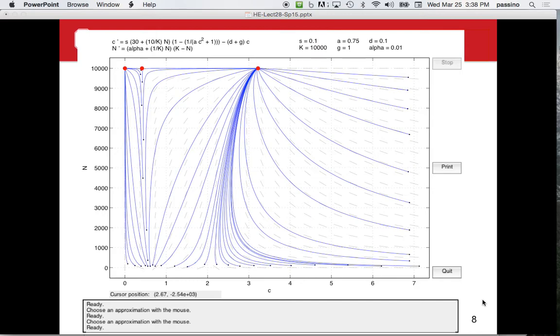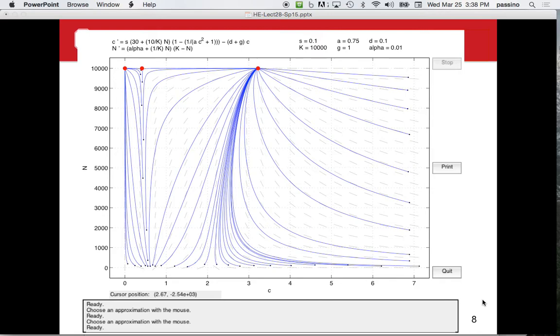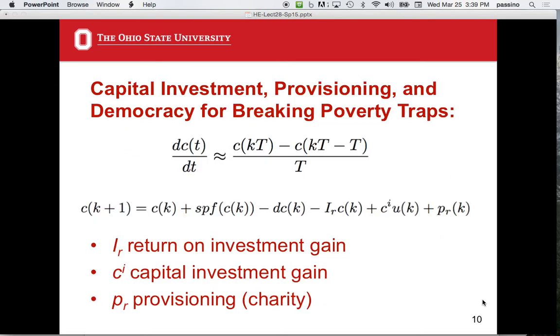Next. Now, that dip below the final value, we talked about that in some detail, and then that lovely saddle point equilibrium in the shrinking region of initial conditions for the poverty trap. Switch it. Slight switch in subject set. You understand. So technology shrinks poverty traps. That's the main message. In a complicated way, but it shrinks poverty traps.